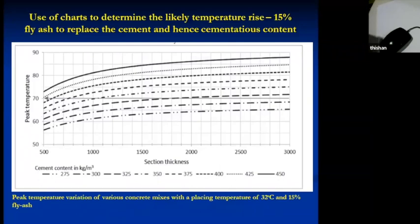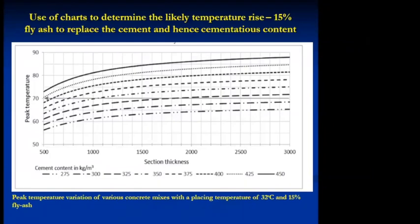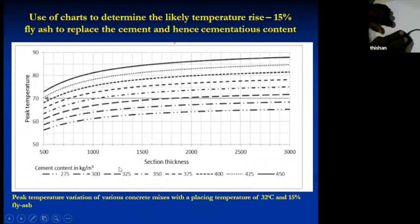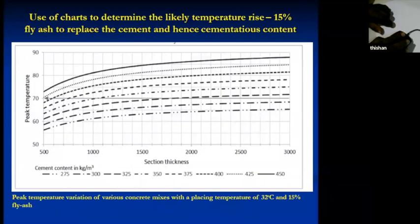We now have a coal power plant producing fly ash — type F fly ash. With 15% fly ash, a 1500 mm thick section can use a total cementitious content of 325 kg/m³ — that is 275 kg of cement and 50 kg of fly ash — and the maximum temperature stays below 70 degrees. This is very useful information when deciding the grade of concrete.